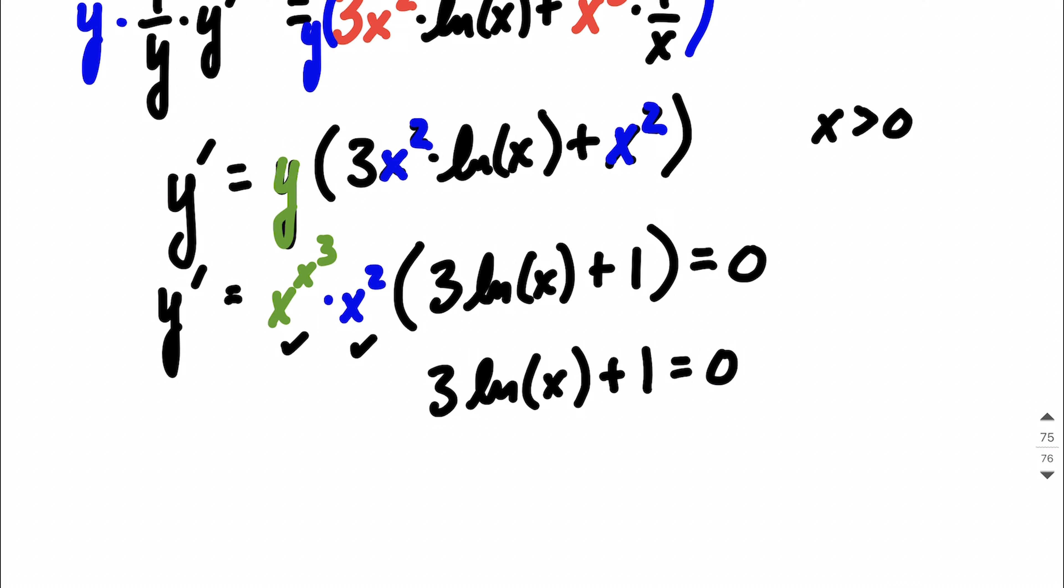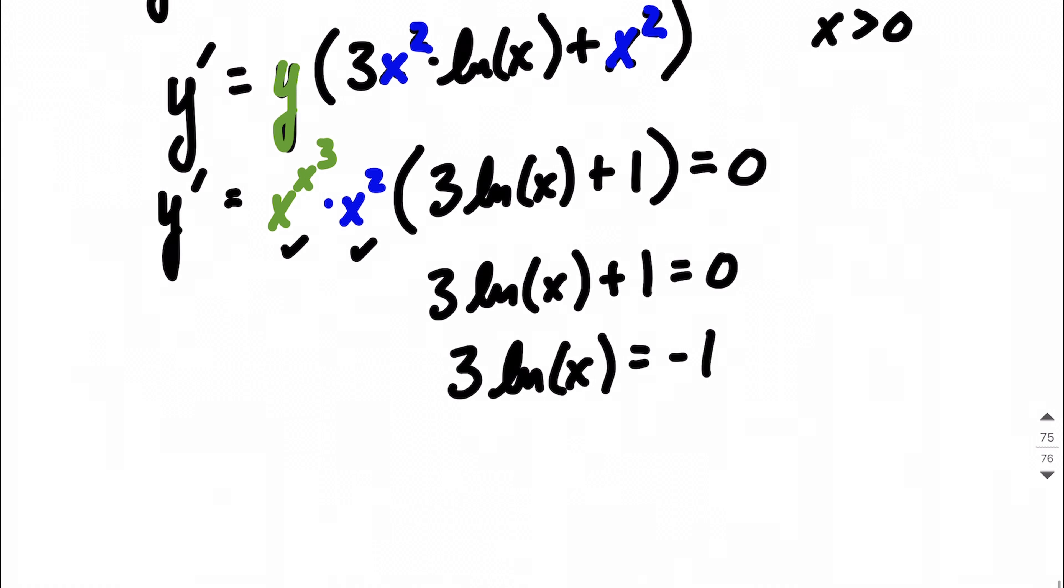The solving down shouldn't be too bad. First, I'm going to subtract the 1. So 3 natural log of x is going to be equal to negative 1. Next, I'm going to divide both sides by 3.